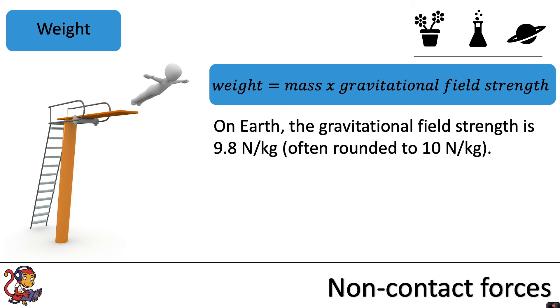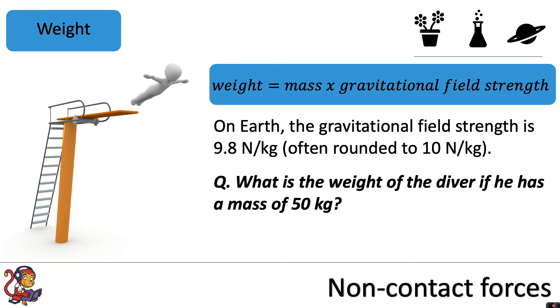So on Earth, the gravitational field strength is 9.8 newtons per kilogram, and you often see that rounded to 10 newtons per kilogram in some questions. So if we were to answer the question, what is the weight of the diver if he has a mass of 50 kilograms,